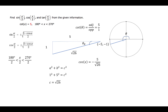That will be determined by the location of the angle x over 2. Since x is between 180 degrees and 270 degrees, x over 2 will be between 180 degrees divided by 2 and 270 degrees divided by 2. So x over 2 will be between 90 degrees and 135 degrees. This tells us that the sine of x over 2 will be positive, and the cosine of x over 2 will be negative, because x over 2 is in the second quadrant, between 90 degrees and 135 degrees.